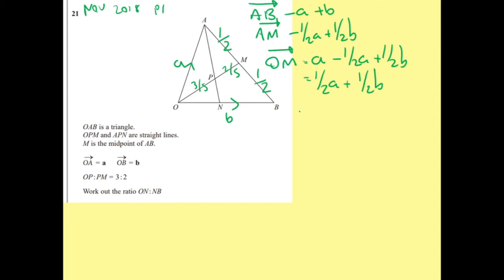I can now try and work out what OP is. So OP is 3 fifths of half A plus half B. So 3 fifths times half is 3 tenths. So this is 3 over 10 A plus 3 over 10 B.